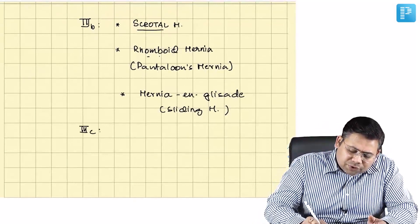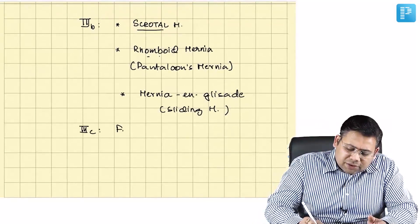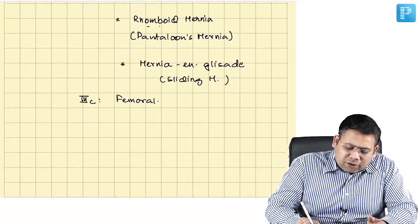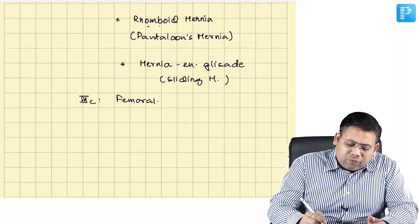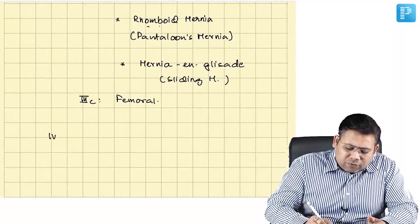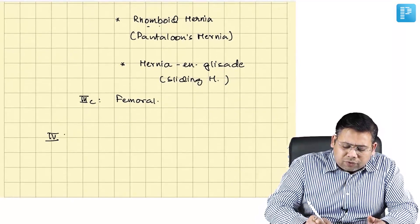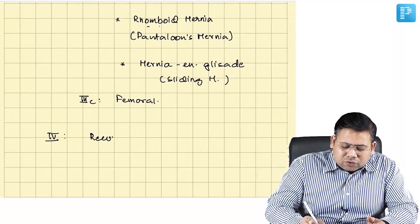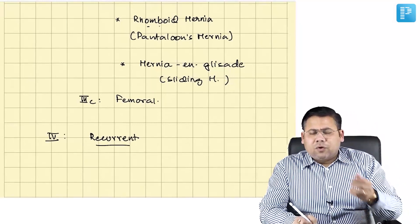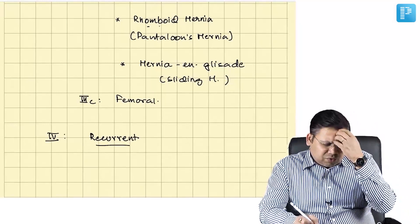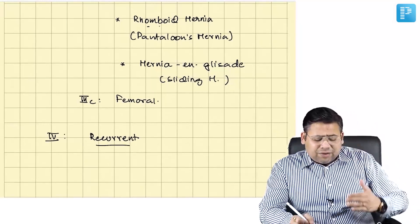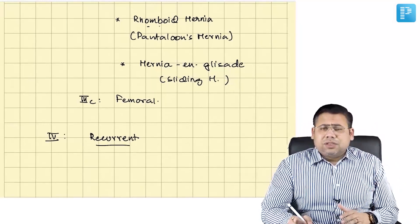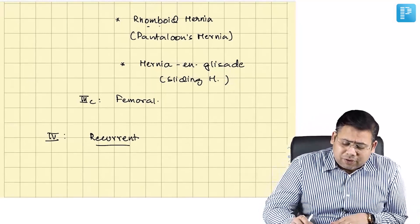Type 3C is a femoral hernia. What is Type 4? Type 4 is recurrent — 4A, 4B, 4C. Nothing much to remember there except that Type 4 is a recurrent type of hernia.